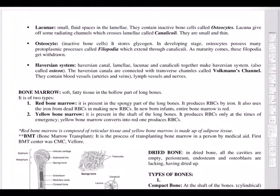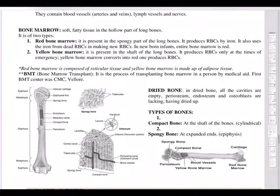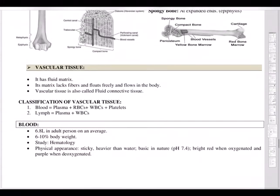Developing osteocytes possess many protoplasmic processes called filipodia. The Haversian system is centered around the Haversian canal. Inside the bone is a cavity called the bone marrow. Red bone marrow is present in the spongy part of long bones and produces RBCs — this is important. Yellow bone marrow produces RBCs in emergency situations. Bone marrow synthesis of red blood corpuscles is a frequently asked exam question.